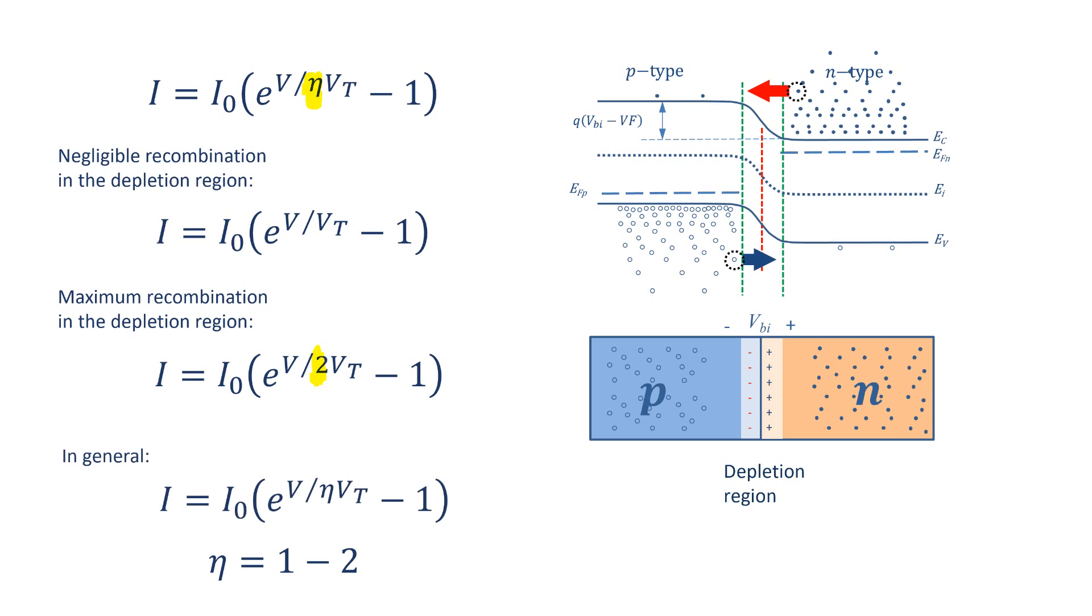In general, eta varies between 1 and 2 depending on the current. At much larger currents, there is another effect called high carrier injection, which reduces the rate of change in the current and increases eta towards 2.